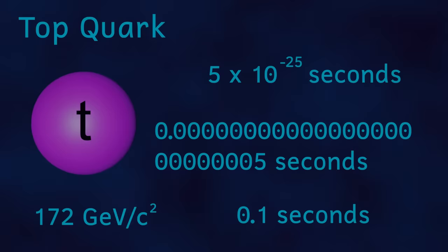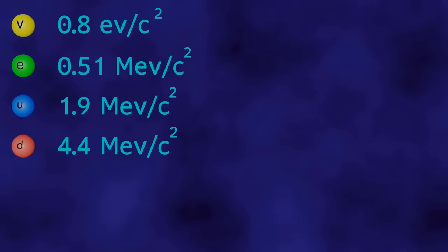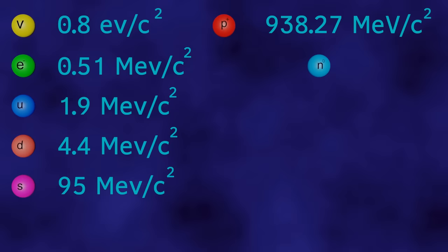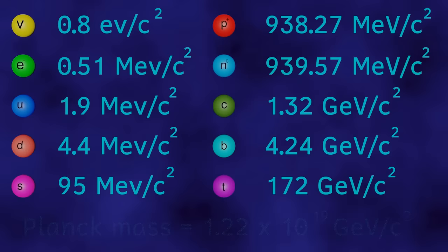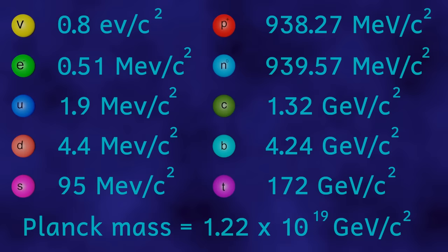So in terms of electron volts per c squared, how do these particles compare to the mass of the Planck mass? Well in terms of particles and measuring in electron volts per c squared, the Planck mass is huge. It's 1.22 times 10 to the 19 giga electron volts per c squared. That's more than a million billion times bigger than the mass of even the largest particle.